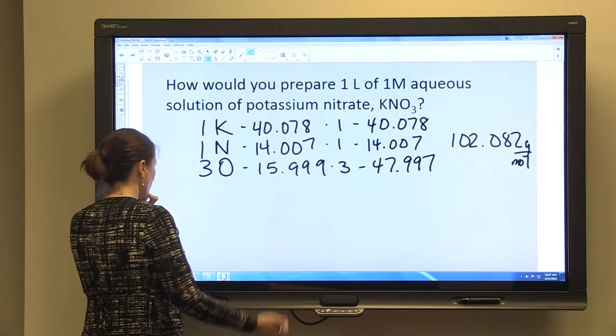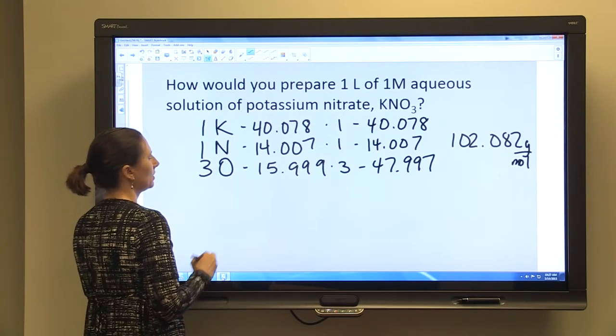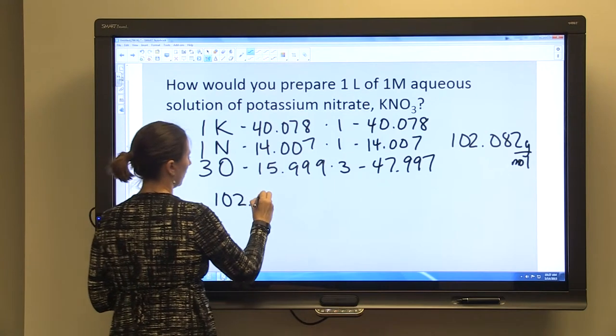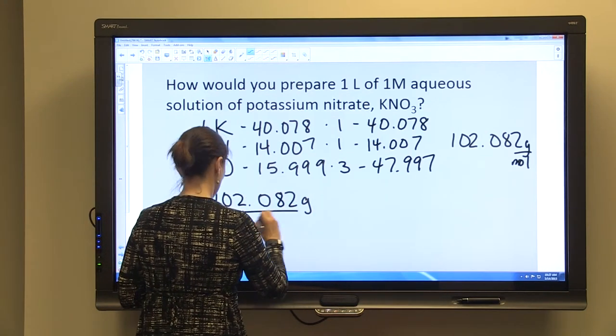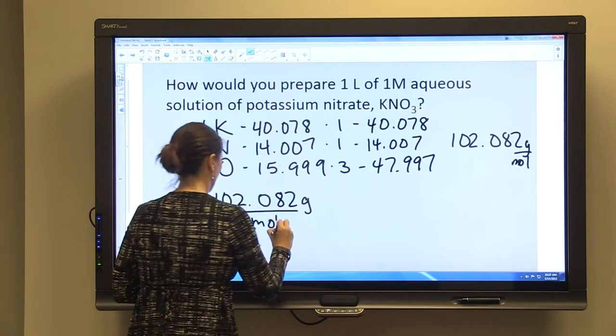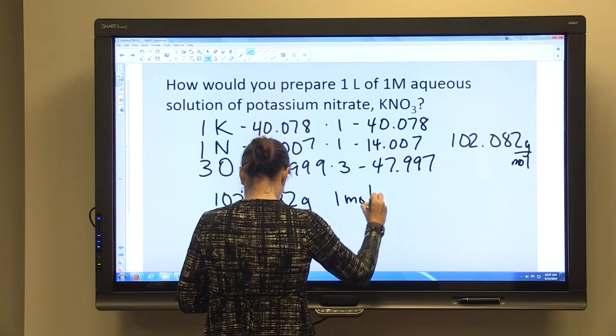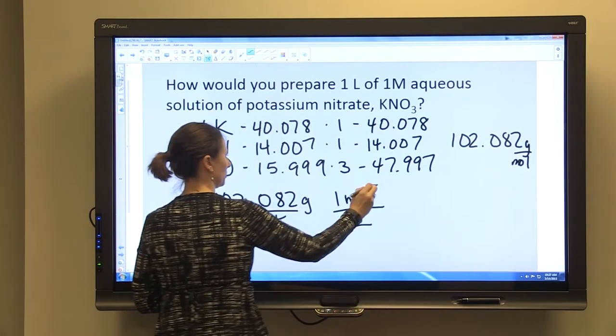And so we need to determine how we would prepare one liter of a one molar potassium nitrate solution. We have 102.082 grams per mole, and we need a one molar solution, which means we need one mole per liter. So those moles will cancel.